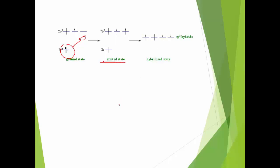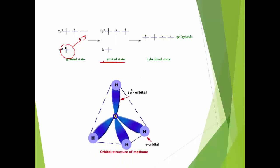In methane, there are four bonds with the hydrogen atom. Here the energy of 2s and 2p is different, so the four C-H bonds should be of different lengths - one bond should be of one length and the next three bonds should be of some different length. But practically, all the four bonds are similar.